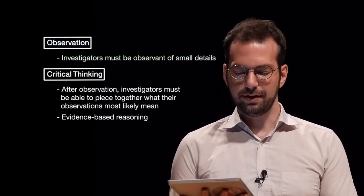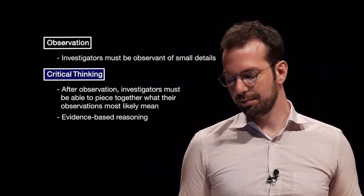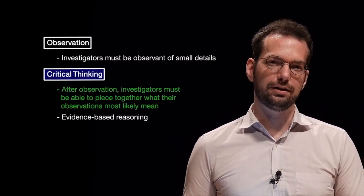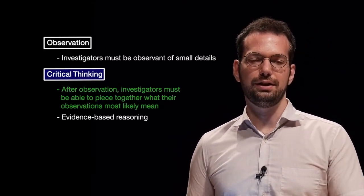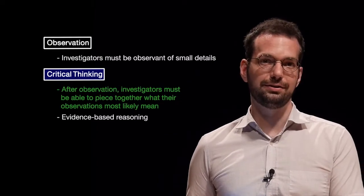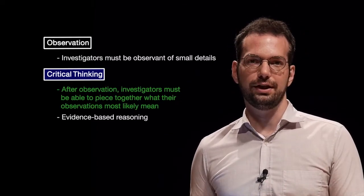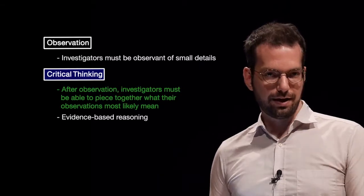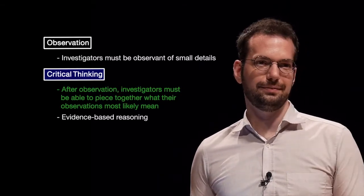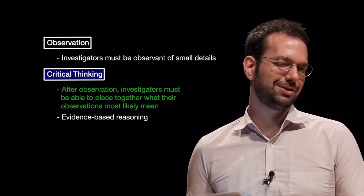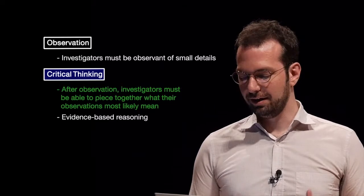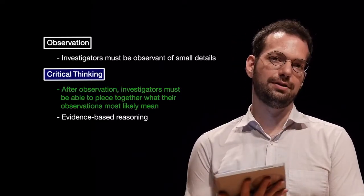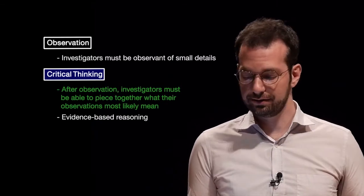Critical thinking: after observation, investigators must be able to piece together what their observations most likely mean. If I see somebody who is supposed to be a witness and they are very nervous in their interrogation, why are they nervous? Maybe they're lying, maybe they're part of the crime. What can the observation of them being nervous tell me about the investigation or where I should look next?